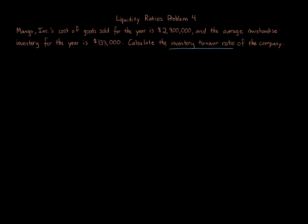The inventory turnover ratio formula is straightforward: the numerator is cost of goods sold for the year — or whatever period you're examining — and the denominator is the average merchandise inventory. We average the inventory because merchandise inventory appears on the balance sheet as a snapshot on a specific date, whereas cost of goods sold on the income statement represents a change over time. You can't compare a single-day balance sheet figure to a period-based income statement figure, so you average the inventory over the period.